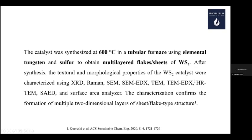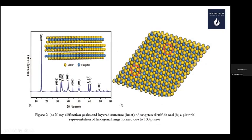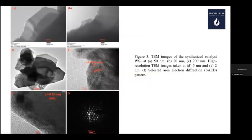After synthesis, we characterized the catalyst to check whether it is suitable. This was done by testing textural and morphological properties and acid site tests. We can see the layered structure of sulfur and tungsten in the X-ray diffraction pattern. Pictorial representations done by software show the planes present, and this can be confirmed through TEM analysis.